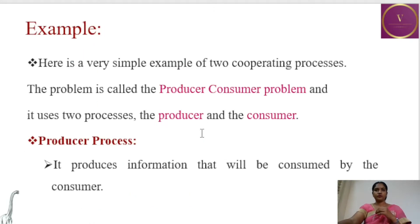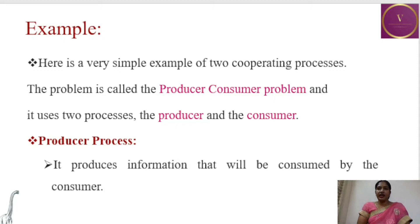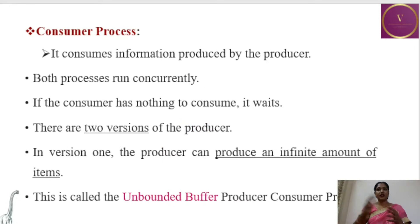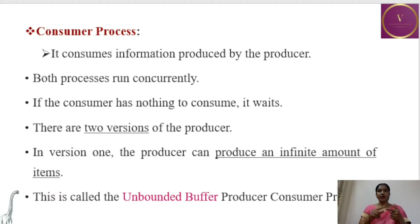One good example of a cooperating process is the producer-consumer problem. In this example, we have two cooperating processes: the producer and the consumer. The producer process produces information that will be consumed by the consumer, while the consumer process consumes information produced by the producer. Both processes run concurrently. If the consumer has nothing to consume, it waits. In version one, the producer can produce an infinite amount of items with no upper limit — this is called the unbounded buffer producer-consumer problem.